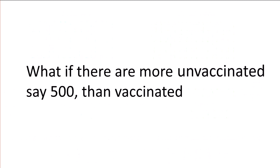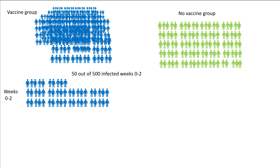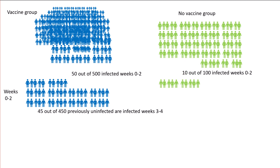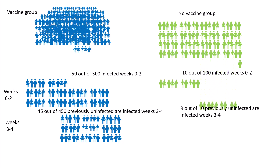It turns out that efficacy will appear even greater if there are more unvaccinated than vaccinated. Here we have 500 in the vaccine group and 100 in the no-vaccine group. So 50 out of the 500 are going to be infected in weeks 0 to 2, and 10 out of the 100 are infected in the no-vaccine group. Then 45 out of the 450 previously uninfected are going to be infected in weeks 3 to 4, and 9 out of the 90 previously uninfected from the no-vaccine group get infected.